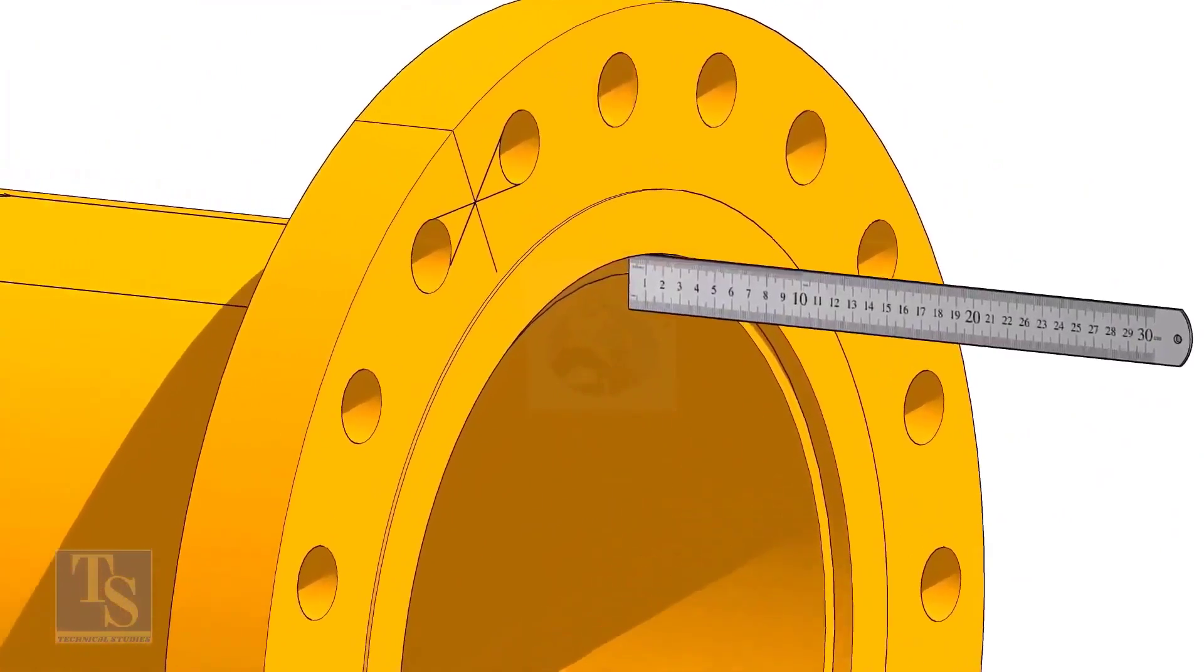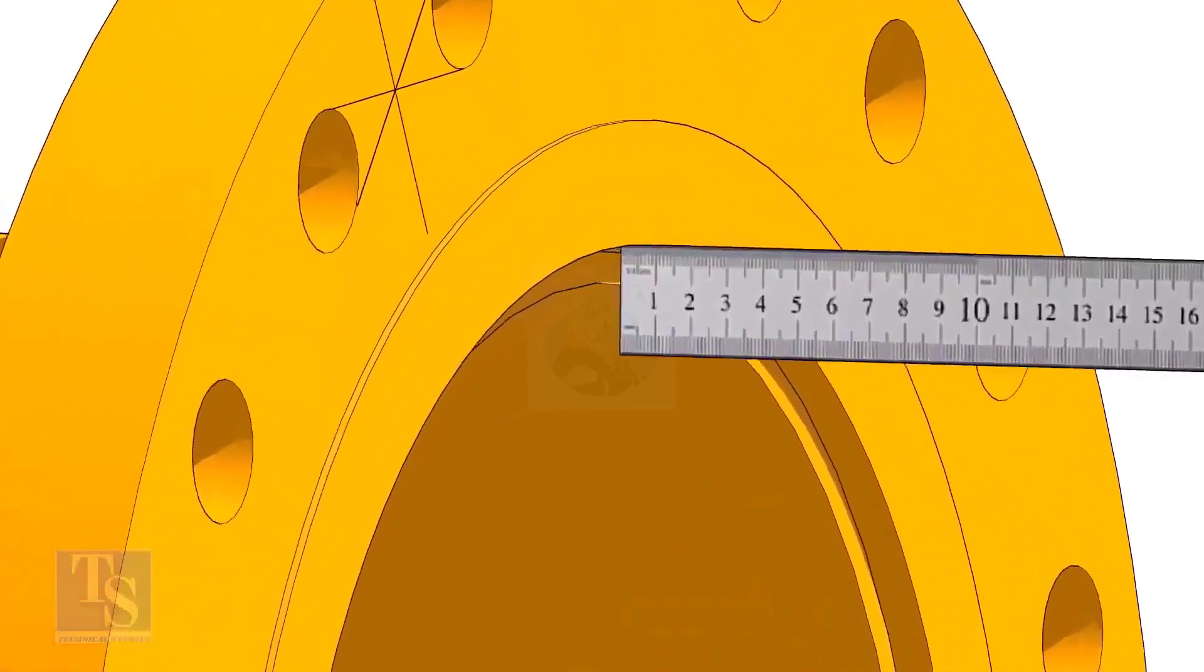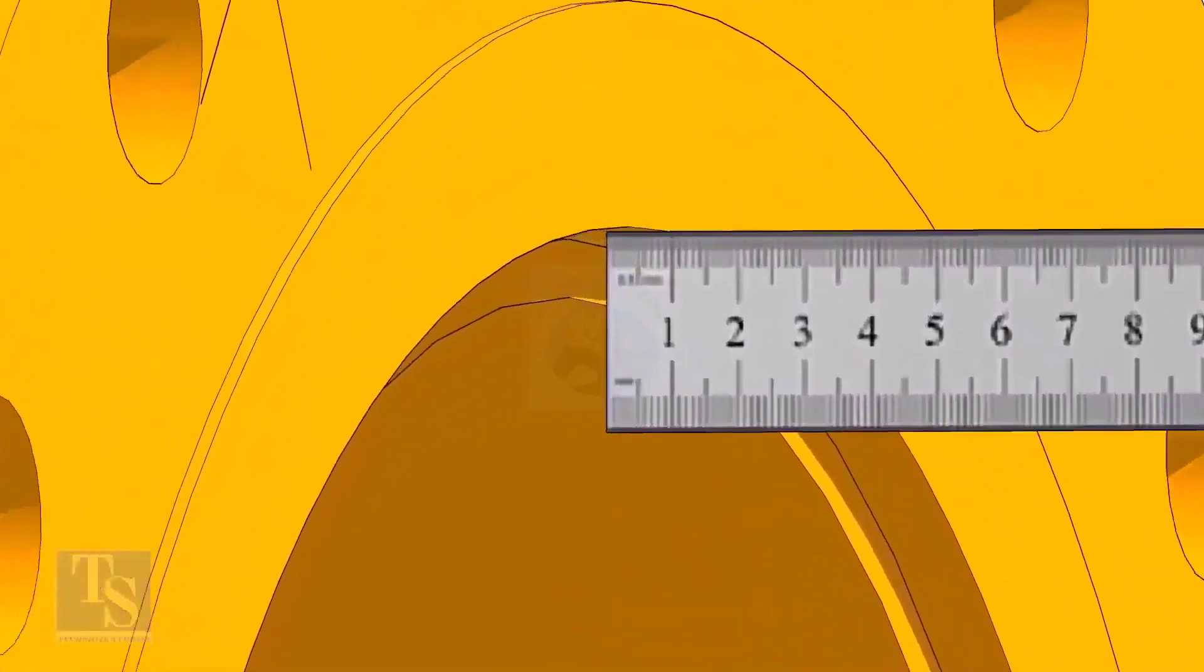Fix the distance between the flange face and the pipe face. Usually, this measurement is equal to the thickness of the pipe.